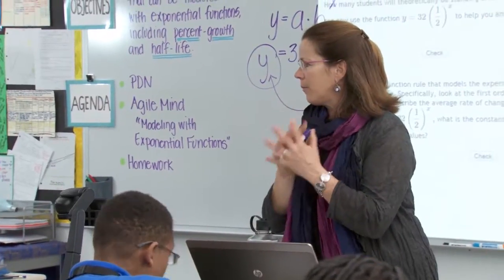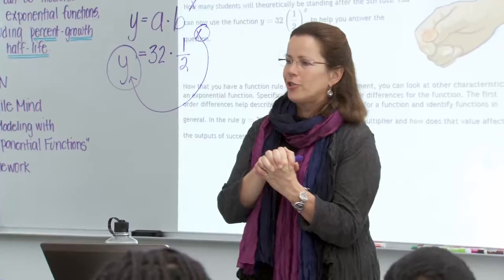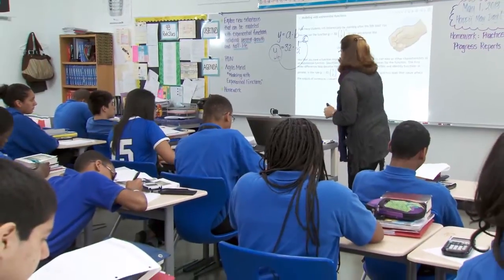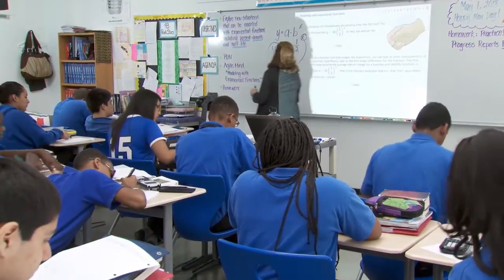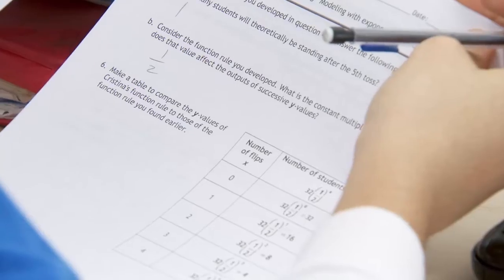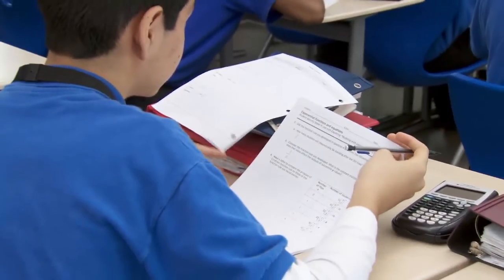Being able to move between all those different representations is something that AgileMind reinforces from the very beginning of the Algebra 1 curriculum. Today was a perfect illustration of moving back and forth between multiple representations. What's the constant multiplier here? 32 is our starting value. What are we multiplying by each time? By one half. The goal is always: experience first, go through multiple representations, apply a math framework, and then ask extension questions to confirm understanding and ensure that learning has been embedded for students.